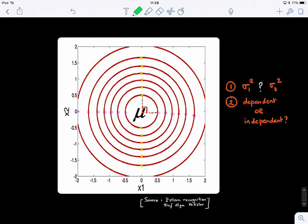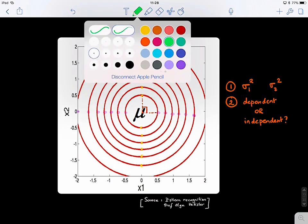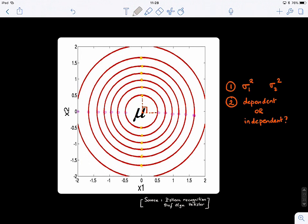What do you guys think about sigma 1 and sigma 2? Are they equal, greater, one is greater than the other, smaller? Are they dependent or independent? So who says they are dependent? Independent, right? Yeah, so they're independent.